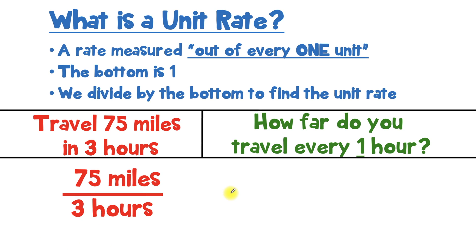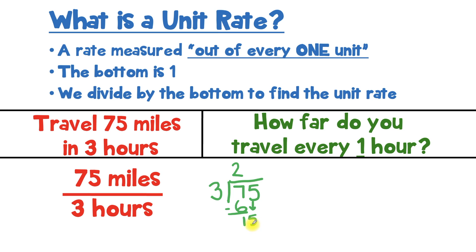So let's set up our long division. 75 as our top number is getting divided, which means it's going to go inside the long division notation house. Then I'll put the line here and a line here. And since we're dividing by three, that will go outside. So how many times can three go into seven? Three can go into seven two times. Two times three is six. When I subtract that, I get one. The next thing I need to do is bring down the five. That gives us 15. And three can go into 15 five times, because five times three is exactly 15. When I subtract that, I get zero.